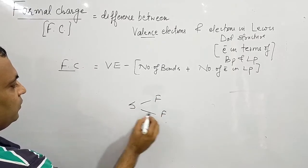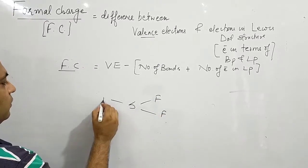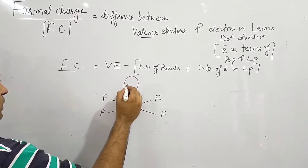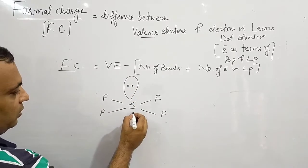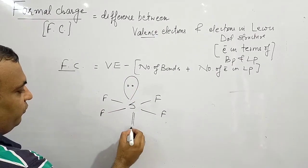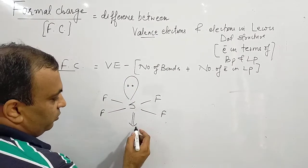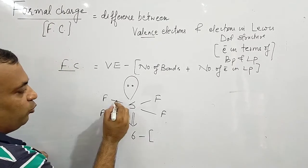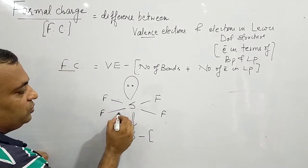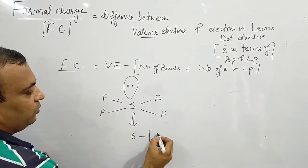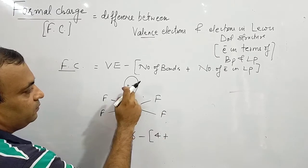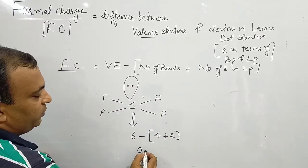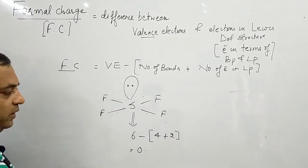SF4 — this is the structure of SF4. We will calculate the formal charge on sulfur. Sulfur has 6 valence electrons minus 4 bonds plus 2 electrons in the form of lone pair. So the formal charge comes out to be 0.